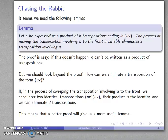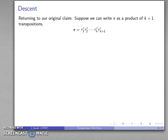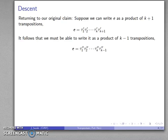While we did take the easy proof, if we look a little bit deeper, a better proof gives us a more useful result. Not only do we eliminate a transposition involving u, but in fact we eliminate two transpositions. So we reduce the number of transpositions down to k minus 2. Going back to our original claim: suppose we could write e as a product of k plus 1 transpositions. It follows that we should be able to eliminate two transpositions, which knocks us down to e as a product of k minus 1 transpositions.